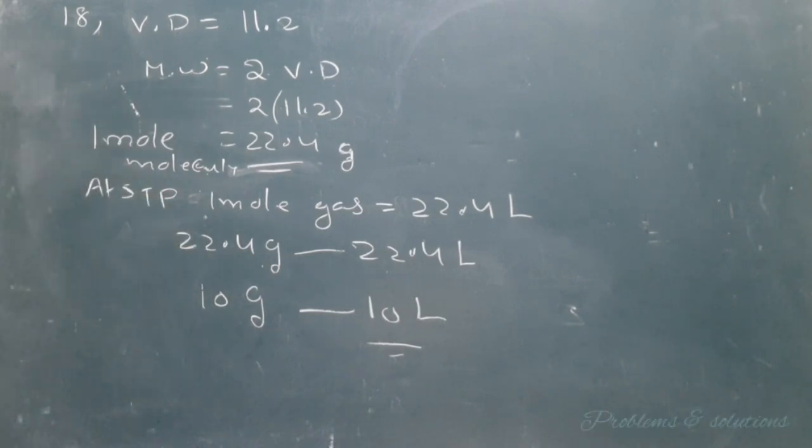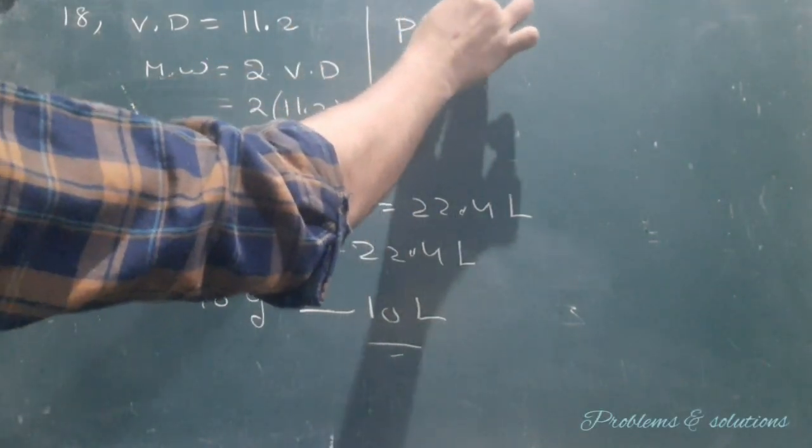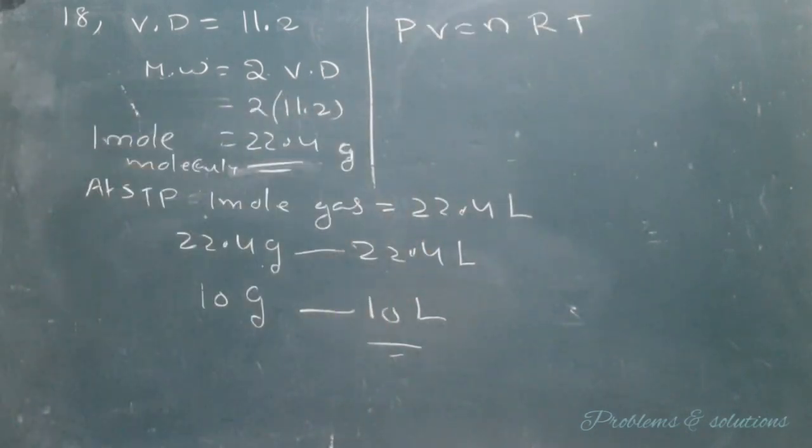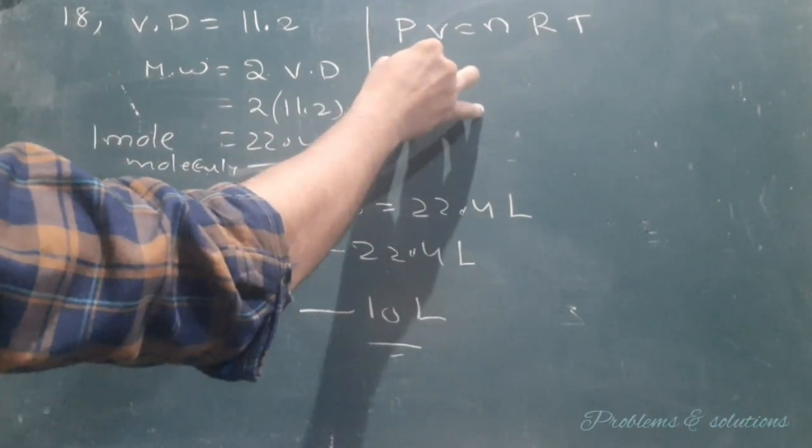But in states of matter, we have a formula: PV equals nRT. PV equals nRT. Here we have to find the volume.